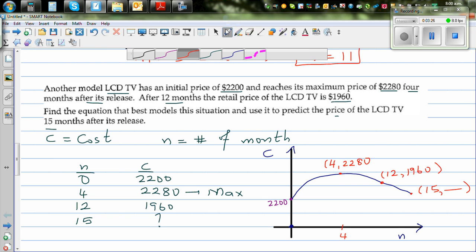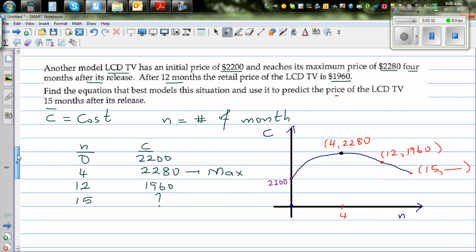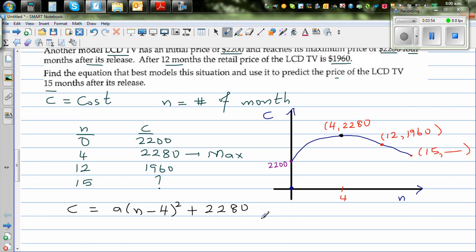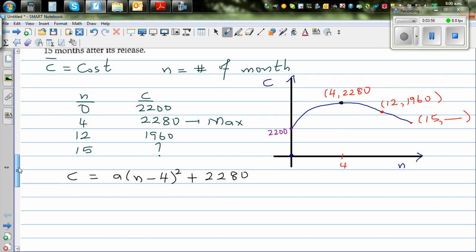So now just looking at the vertex or the turning point, you can see the parabola has gone. So the equation is C is A times, it has gone 4 to the right. So it should be N minus 4 the whole squared. And it has gone 2,280 up. So this is 2,280. Now we need to figure out A for which we can put either this point or this point. So I'm going to select this point.